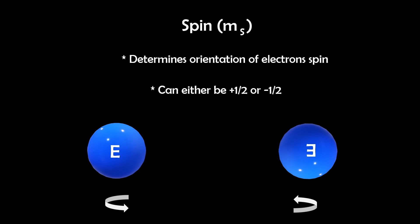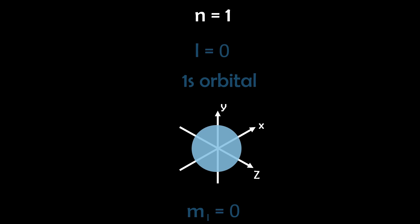Lastly, the spin quantum number M sub S, which is either positive half or negative half, represents the electron's spin direction. This aligns with the Pauli exclusion principle, ensuring no two electrons in an atom have the same set of quantum numbers. Now let's look at some quantum numbers.